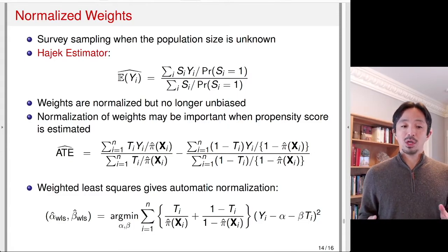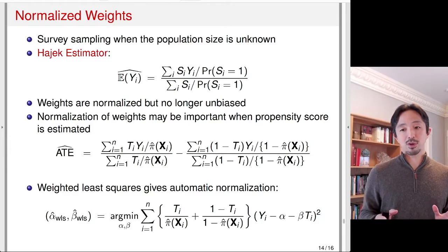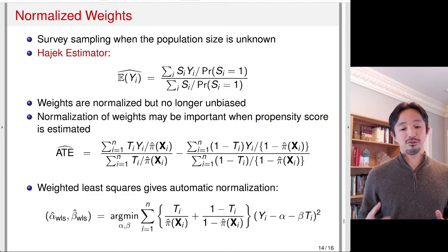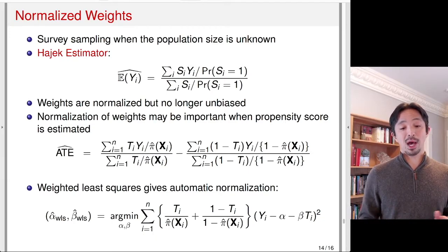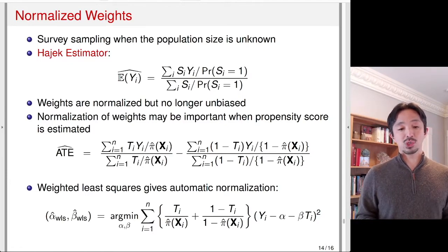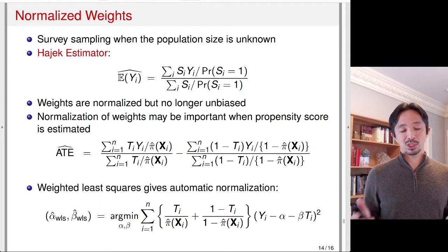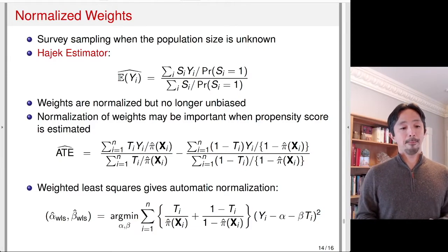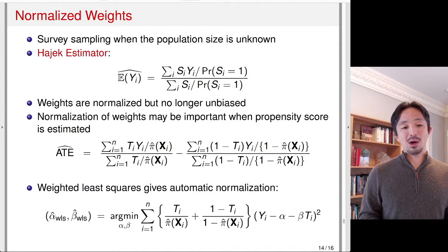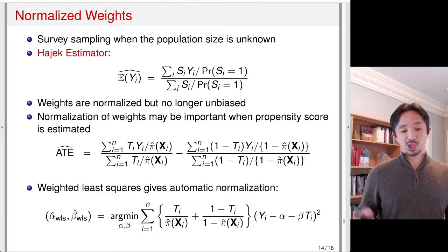Typically, normalizing the weights is a good thing. However, this may not completely solve the problem if the weights are so extreme that a small number of observations account for most of the weight, causing the effective sample size to reduce dramatically. In those cases, people often trim the weights — removing extreme-weight observations by capping weights at some maximum allowed value, for example, allowing weights to be at most 20 times the equal-weights case.